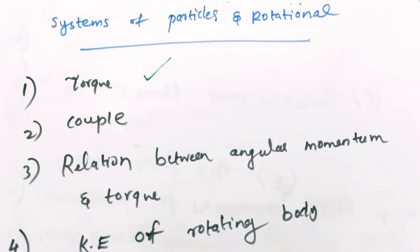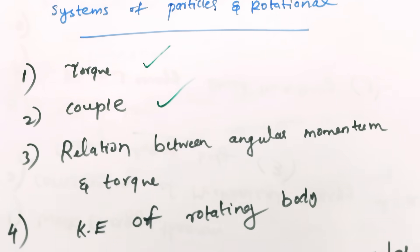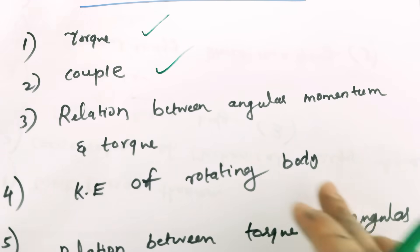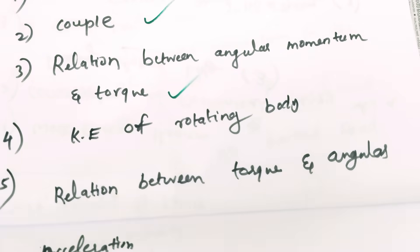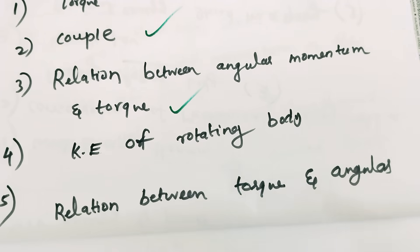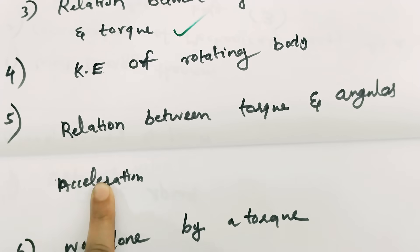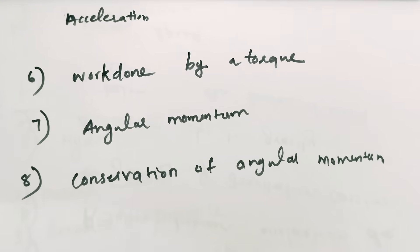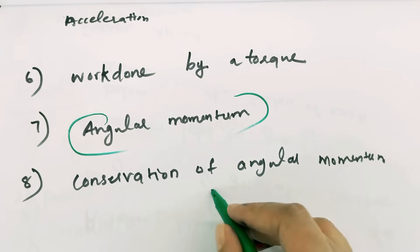What is torque and its unit? That is the System of Particles and Rotational Motion. In the chapter, the equation of torque and its unit, the relation between angular momentum and torque, what is the kinetic energy of a rotating body — derive the kinetic energy of a rotating body, and the relation between torque and angular acceleration, work done by a torque, derived from conservation of angular momentum.